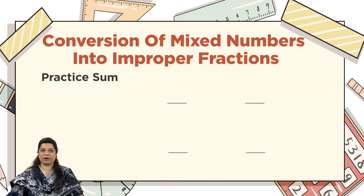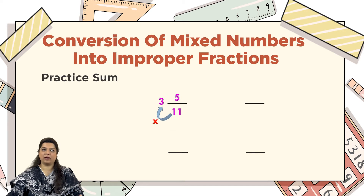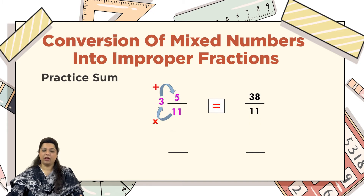Now let's do some practice questions. The first example is 3 whole number 5 upon 11. Step 1: multiply the denominator by the whole number part — 11 multiplied by 3 equals 33. Step 2: add 33 to the numerator 5 to get the new numerator, which gives us 38 upon 11. Remember, the denominator never changes — only the numerator changes.